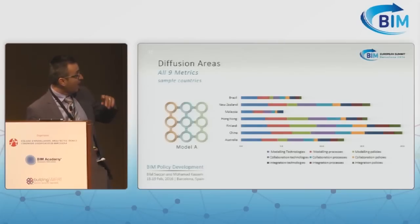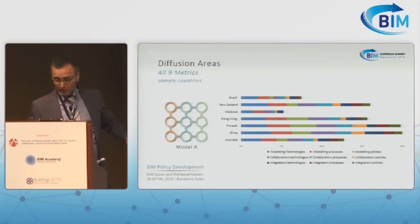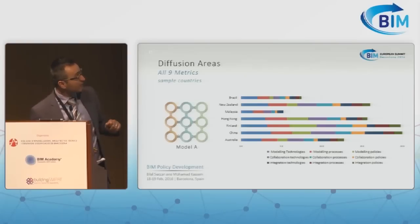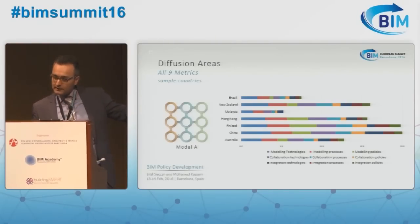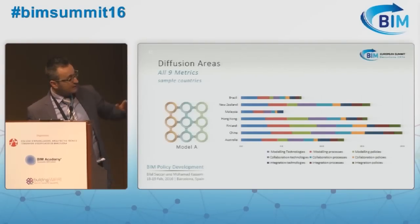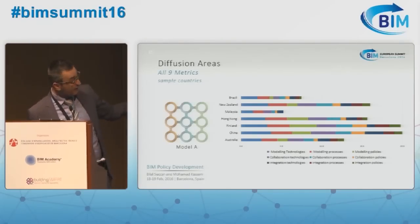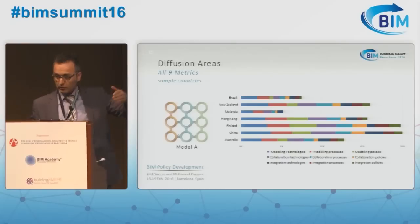Starting with model one, which measures the nine diffusion areas, you can see quickly that different countries have different levels of diffusion. But there is a trend among all countries where modeling and its capability stages are the most highly rated. This is logical given that modeling, collaboration, and integration are all subsequent levels — modeling comes first.